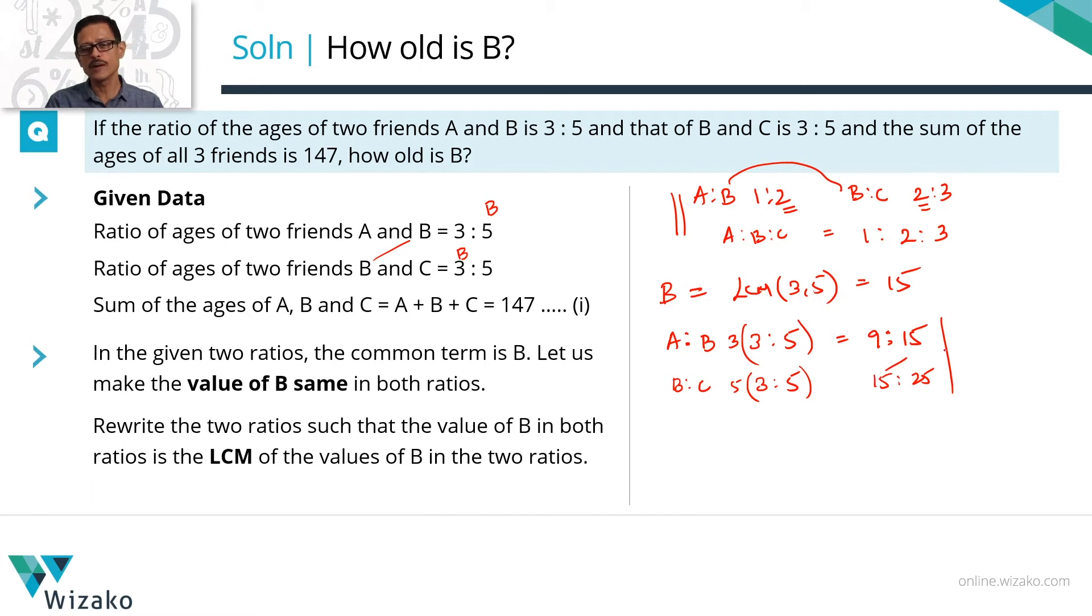So now that you've got this achieved, we can go back to this step and similarly write this ratio also as A is to B is to C is 9 is to 15 is to 25. So if you have two ratios A is to B, B is to C, check whether the value of B which is a connect between these two ratios is the numerical value the same. If it does not, make it same the way we have gone about it.